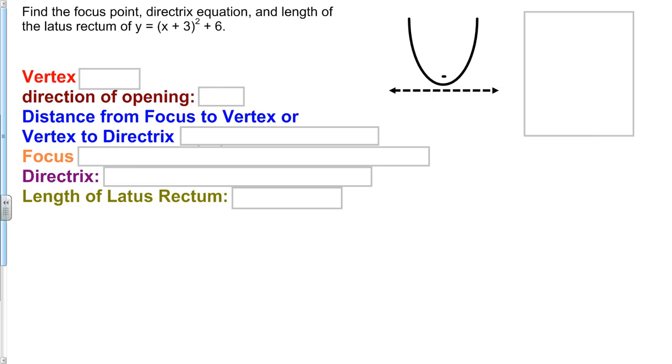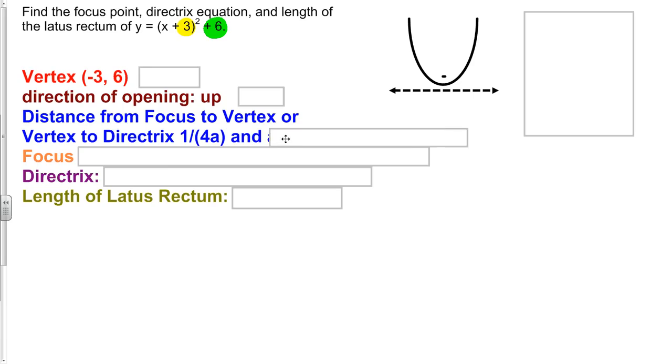So our vertex we can always get by looking at what's in the parentheses. So paired with that x here is a 3. We take the opposite of what's in the parentheses, so in that case our vertex x value will be negative 3. And our vertex y value here is going to be a positive 6. Direction of opening, we already said it's going to be upwards, because our a value is positive. The distance from the focus to the vertex, or the directrix to the vertex, that small distance in there is always going to be 1 over 4a. In this case, a is 1, so that means it's just going to be 1/4.